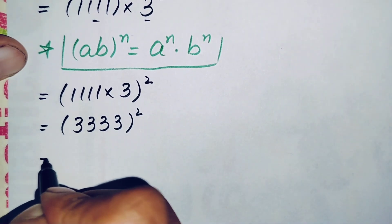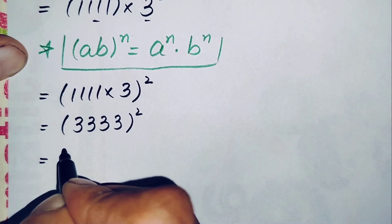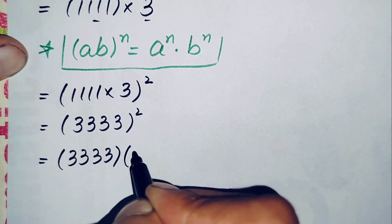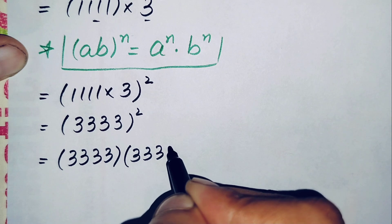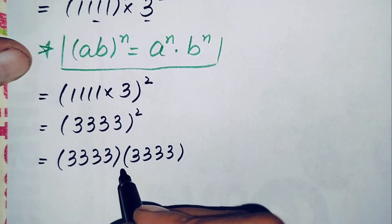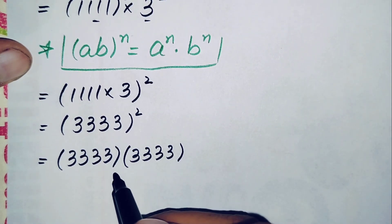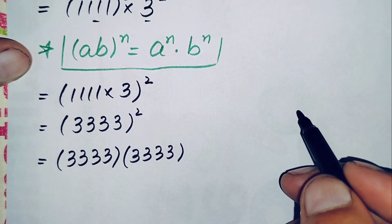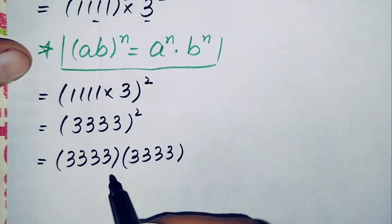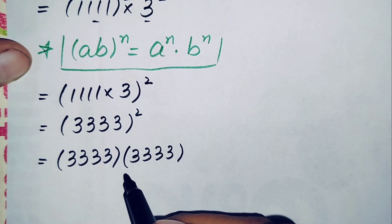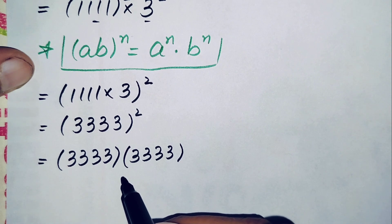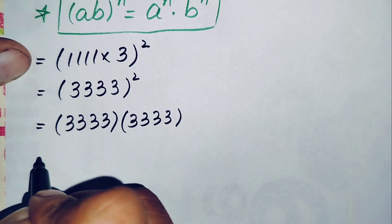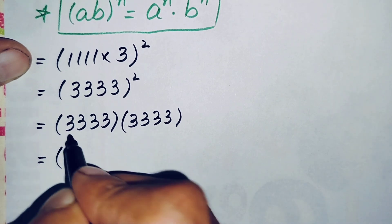Next, we write 3,333 squared as the product of two numbers: 3,333 times 3,333. We can solve this by two methods — ordinary multiplication or by expressing each number as a sum of two numbers whose multiplication is easier. We will use the second method and write 3,333 as a sum of other two numbers.